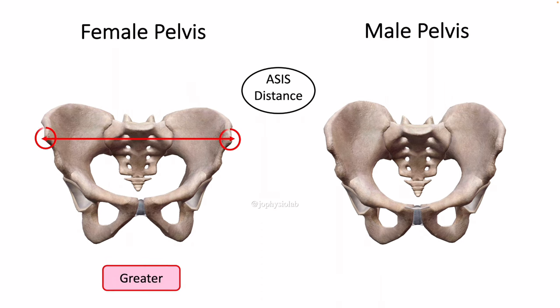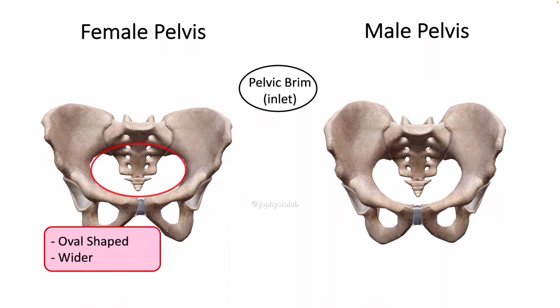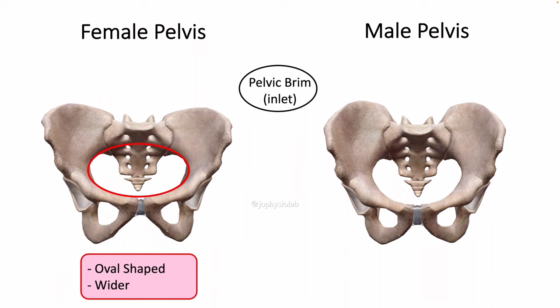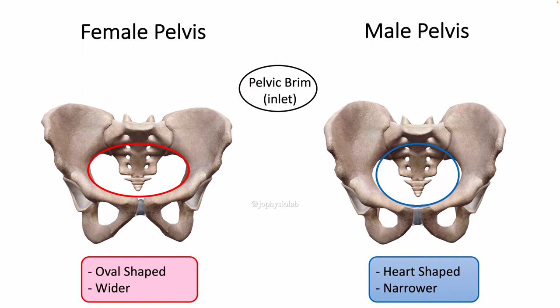There is a greater distance between the anterior superior iliac spines of the female pelvis when compared to the male pelvis. The female pelvis has evolved to its maximum width for childbirth, resulting in the female inlet being large and oval in shape, while the male inlet is more heart-shaped.